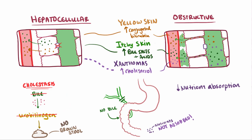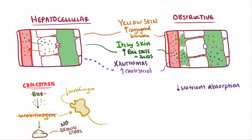A fraction of that urobilinogen is reabsorbed and gets excreted in the urine, so there will be less in the urine as well. Conjugated bilirubin excretion, though, will often be increased in the urine, since it's being excreted from the blood through the kidneys. This is also called bilirubinuria, and will cause darker urine.